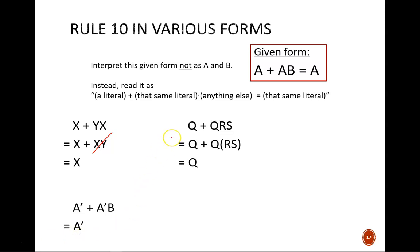In this next example, the anything else is actually two variables being ANDed together. To help us see it, I've included parentheses around RS. The rule still works here. Only the standalone literal remains, so the result here is Q.